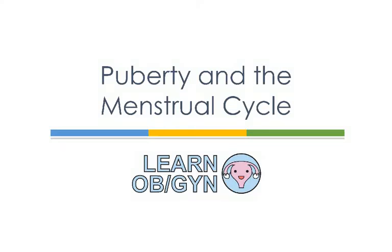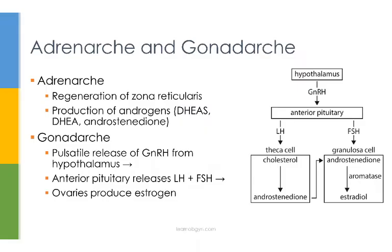Hello, and welcome to today's lecture on puberty and the menstrual cycle. Puberty is a transition from when a person becomes a child to a young adult capable of reproduction.